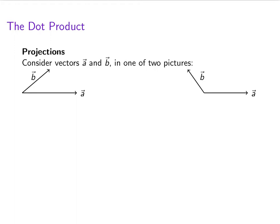Let's think about vectors A and B, and there'll be two different pictures that we'll consider. In these two pictures, one where B kind of points in the same direction as A, one where B points away from A.